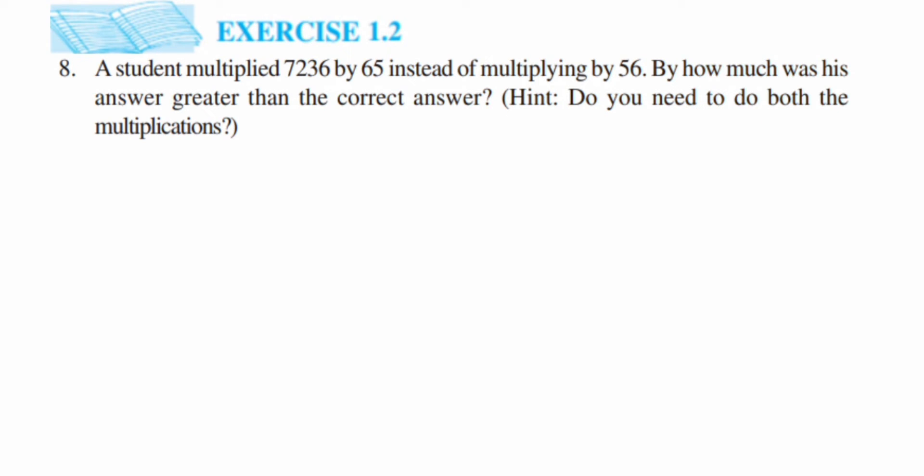So we have to find out the answer by multiplying. The student has multiplied with 65 instead of multiplying with 56, so first we are going to multiply this 7236 with both 65 and 56, and then we are going to find out how much greater it was from the correct answer. So let's start solving this.